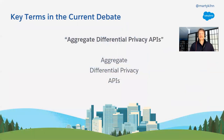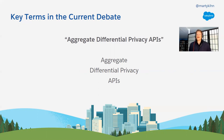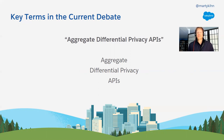How do we ensure for the advertising community, in a privacy-safe way, they get both addressability and accountability? If I had to summarize the future and the key terms and the debate going on now, mostly among engineers but expanding to advertisers, it would be in this phrase: aggregate differential privacy APIs. I break it down into three parts.